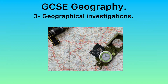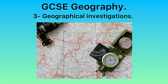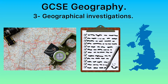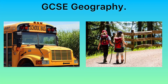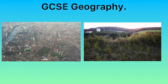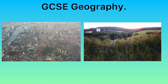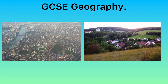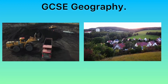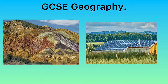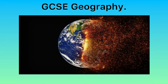Paper 3 focuses on geographical investigations in the form of fieldwork and UK challenges. You'll go out of school on field trips to examine either a river or the coast and either an urban or rural settlement, developing your own inquiry. You will also examine the UK in more depth, from resource consumption to environmental sustainability, and from landscape changes to climate change challenges.